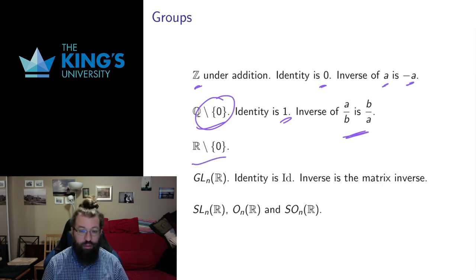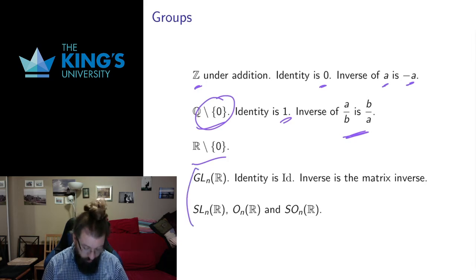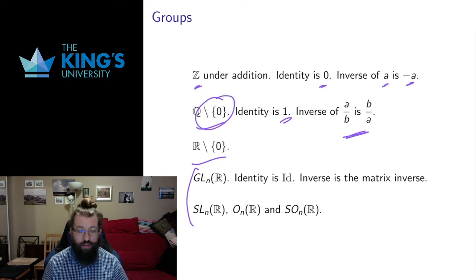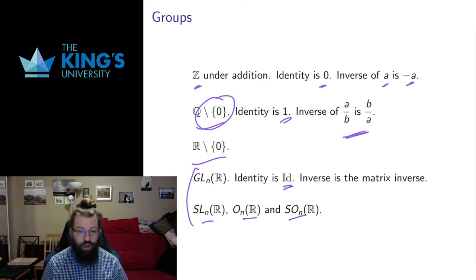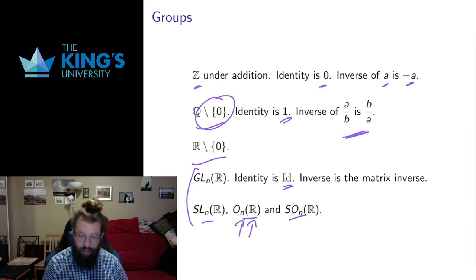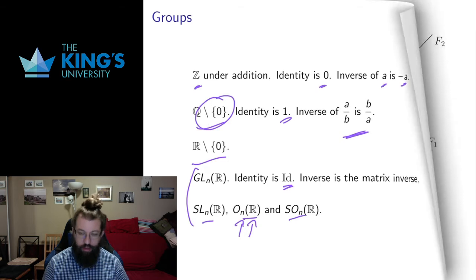The real numbers without 0 are also a group under multiplication. And the matrix groups we've already defined — the general linear group of all invertible matrices, the special linear group, and the orthogonal group — are all groups by this formal definition. The identity matrix is the identity element, and if you have an orthogonal matrix its inverse is also orthogonal, so it stays in the group.